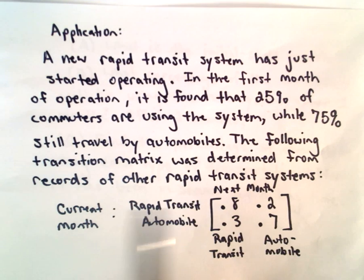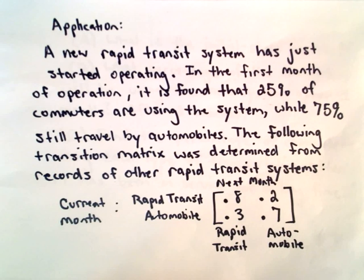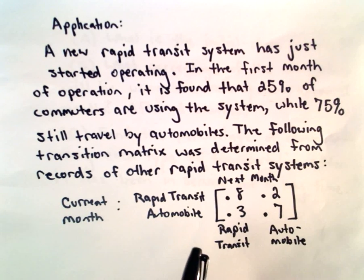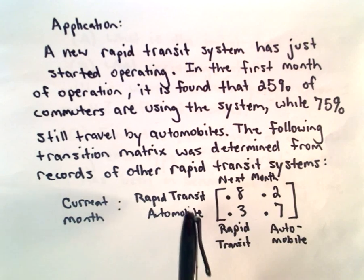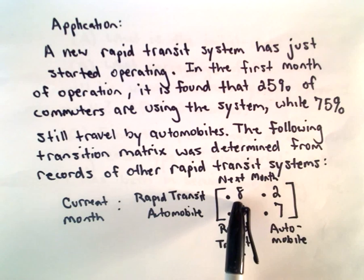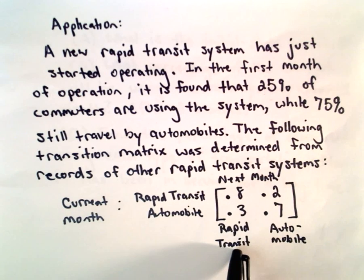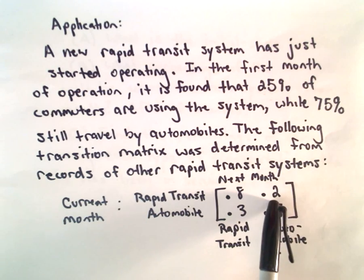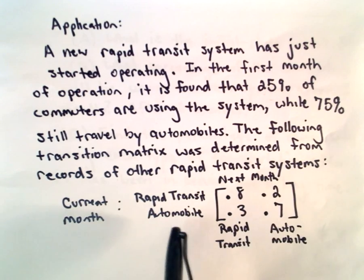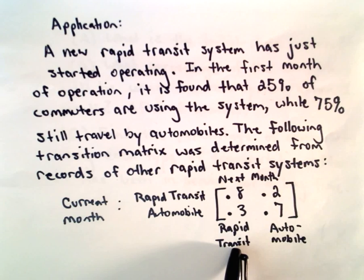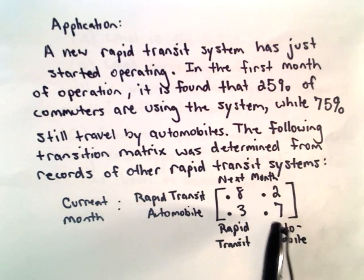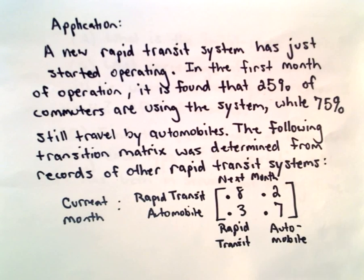The following transition matrix was determined from records of other rapid transit systems. Going from one month to the next, if somebody uses rapid transit there's an 80% probability they'll continue using rapid transit and a 20% chance they'll switch back to an automobile. Likewise, if they're using an automobile initially, there's a 30% chance they'll switch to rapid transit and a 70% chance they'll keep using an automobile.